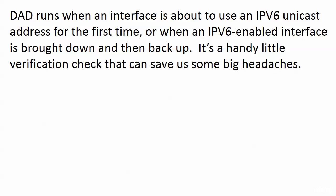DAD doesn't only run when there's a self-assigned address. The DAD procedure actually runs when an interface is about to use a version 6 unicast address for the first time, or when a version 6 enabled interface is brought down and then back up. It's a very quick uniqueness check, but it does save us some big headaches down the road. That is it for DAD — we've got some more IPv6 stuff coming up next.